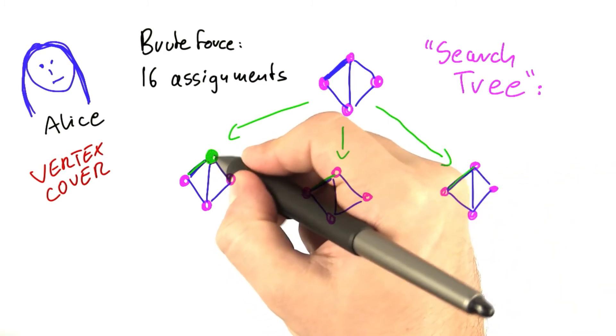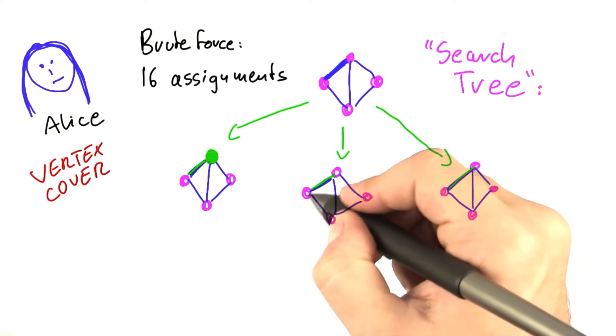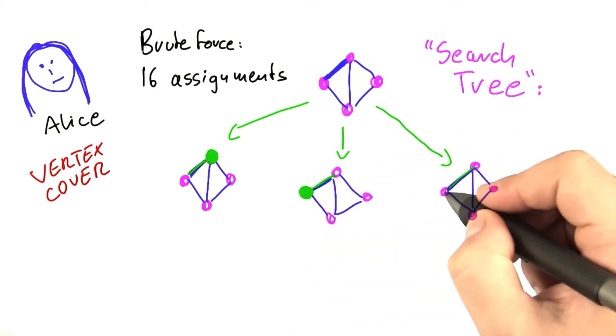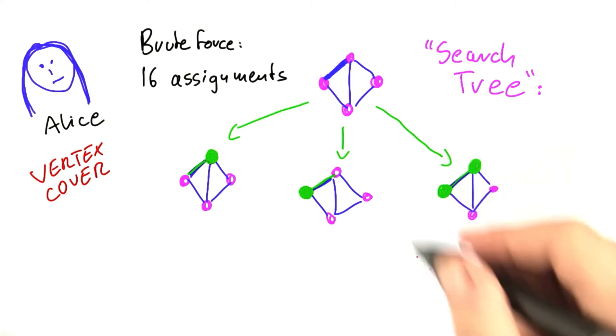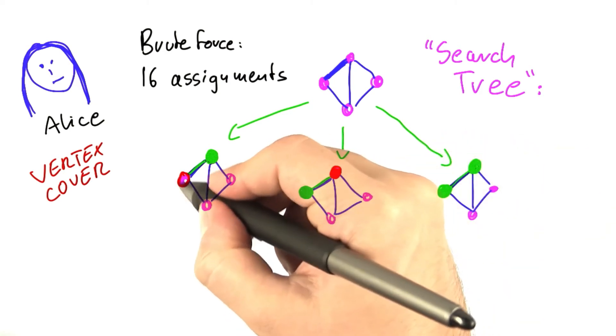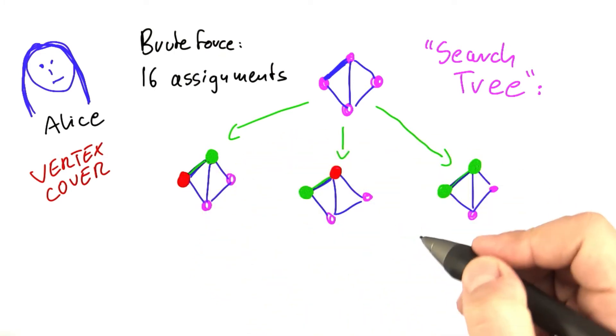One is you take this endpoint here into the vertex cover. The other one is you take this vertex here into the vertex cover. Or of course you can also take both. But you can ignore the case where you would put none of the two endpoints into the vertex cover because then you already know that your solution doesn't make sense.